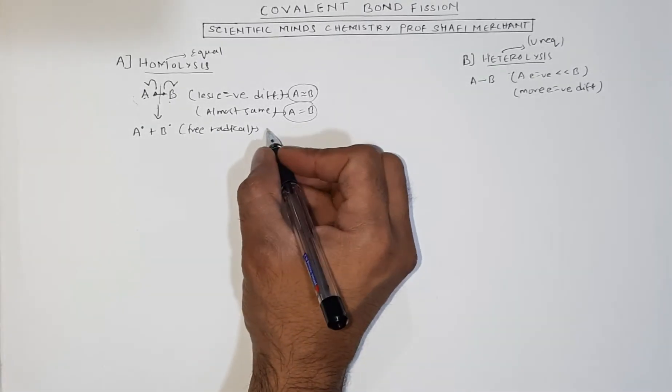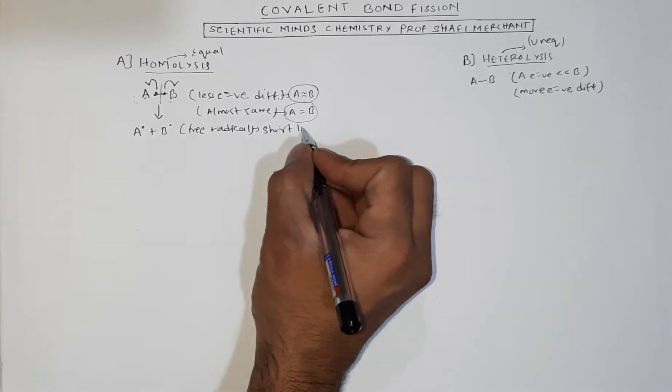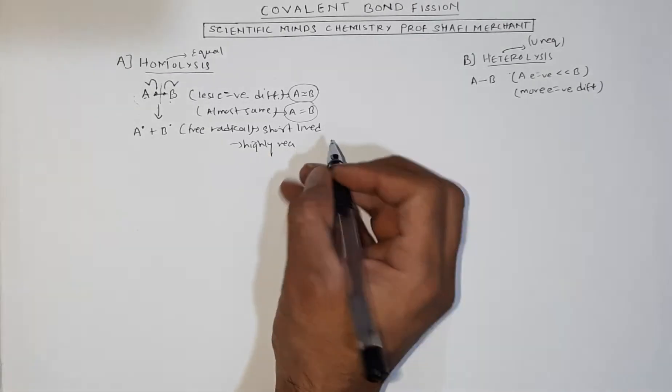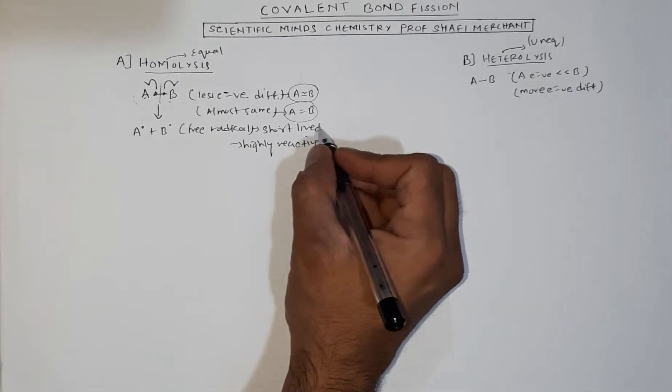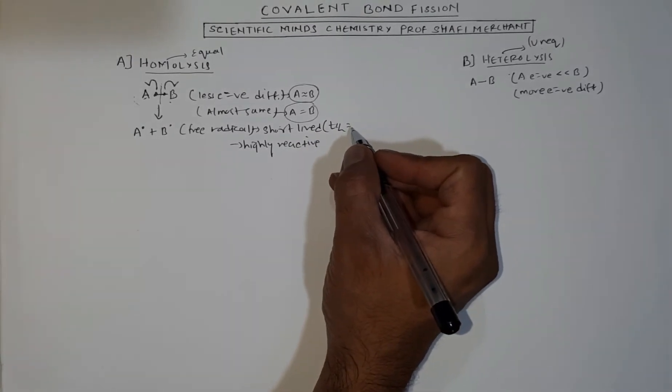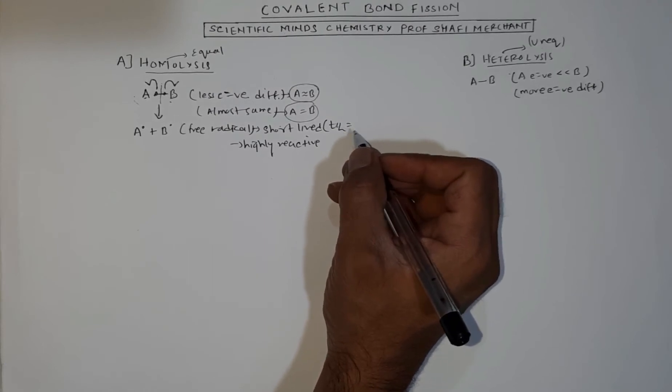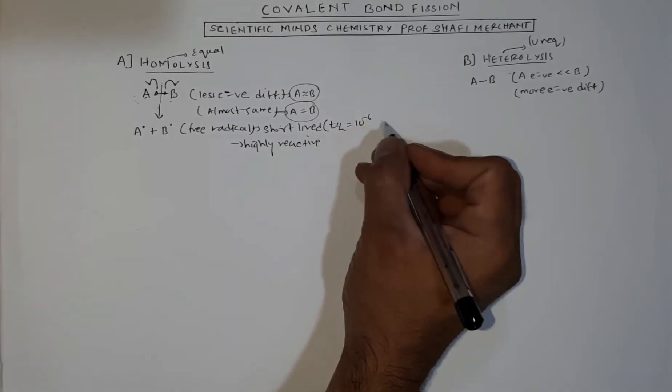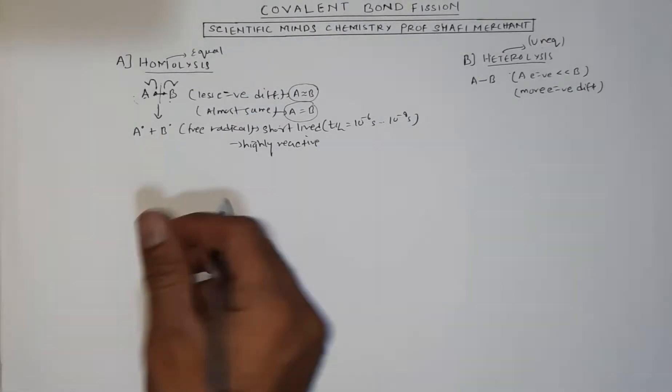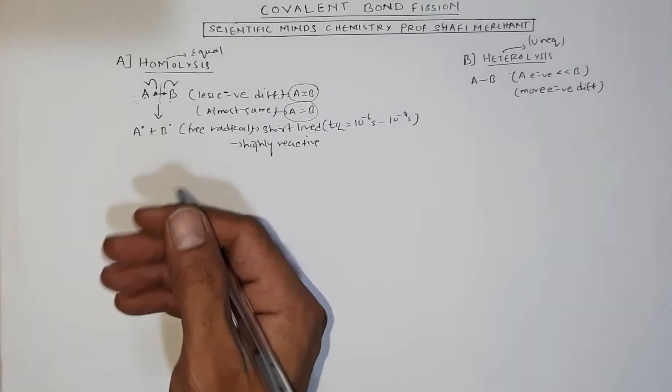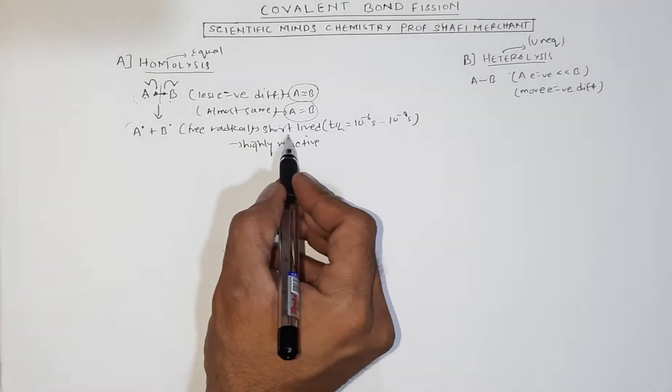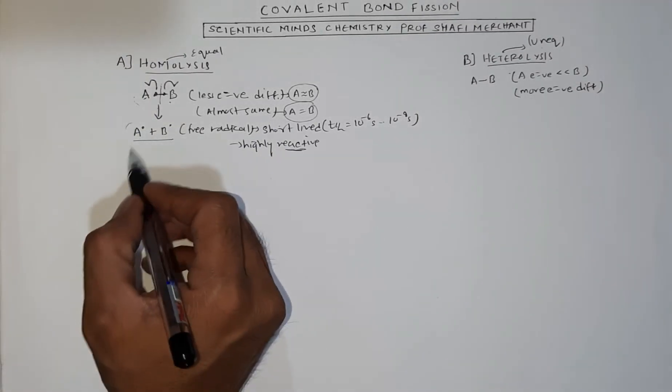Free radicals are very short-lived and highly reactive in nature. Their half-life is extremely less, from 10^-6 seconds to 10^-9 seconds. This means the highly unstable compound will start reacting within seconds after it forms. These are the free radicals.